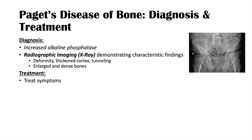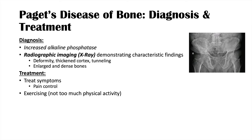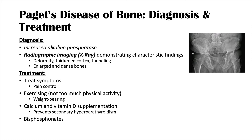Once we make the diagnosis, treatment of Paget's disease of bone includes treating the symptoms — for pain control we can use ibuprofen or other NSAIDs, or acetaminophen. Exercise can also help but we must be cautious due to the increased risk of bone fractures, so mild weight-bearing activities are preferred. We also supplement with calcium and vitamin D to prevent secondary hyperparathyroidism. The key treatment is bisphosphonates such as alendronate or risedronate — drugs with the suffix '-dronate.' Second-line treatment is calcitonin, which helps prevent remodeling, though bisphosphonates are first line.